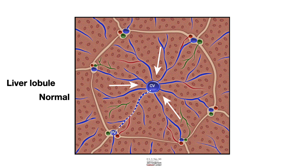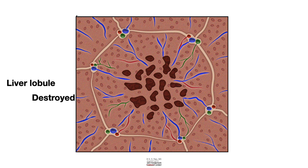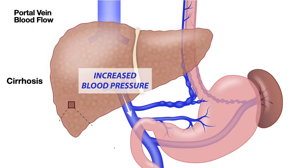In cirrhosis of the liver, the liver lobular architecture is destroyed, and there is resistance to the flow of blood from the portal vein to the central vein. There is also development of communications between the veins and the arteries. These disturbances increase the pressure in the portal vein system, and this increased pressure leads to the development of varices.